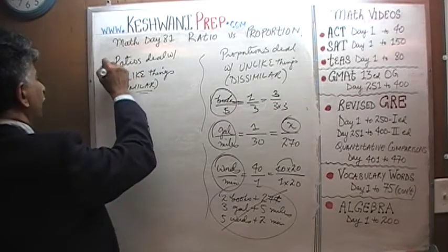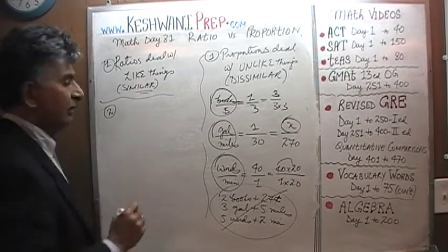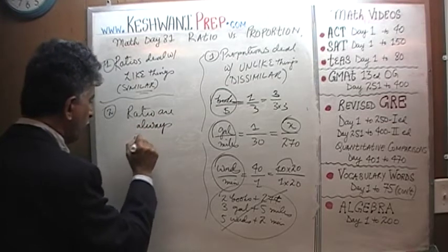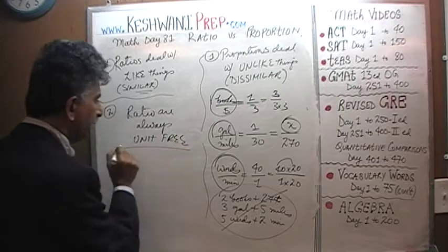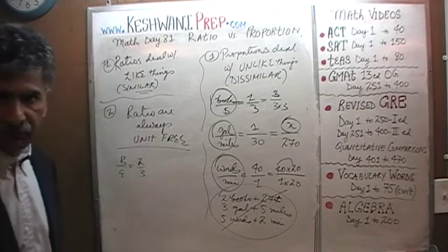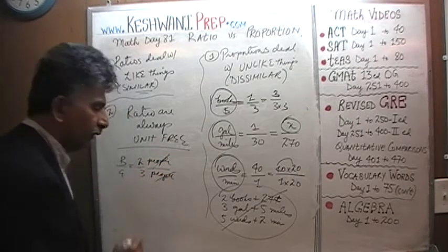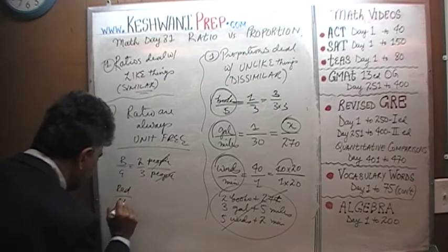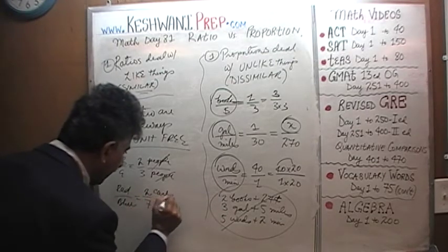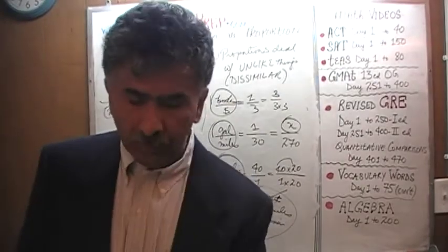So that was the first difference: ratios deal with like things, proportions deal with unlike things. The second fundamental difference is that ratios are always unit-free. We talk about the ratio of boys to girls — it's just two to three. It has no units, because we have people on the top and people on the bottom, and the units cancel out. The ratio of red cars to blue cars might be two to seven — just two to seven, because the units drop out. Ratios are always unit-free.